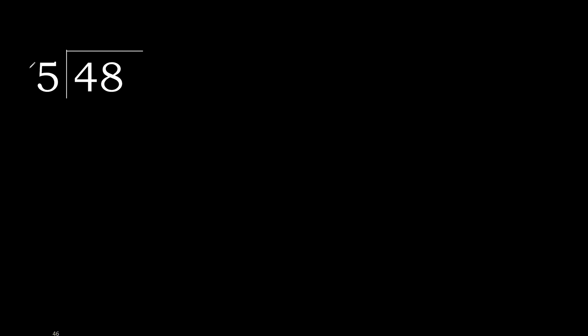48 divided by 5. 4 is less, therefore next. 48 is not less, therefore with 48. 5 multiply by which number is nearest to 48 but not greater? 5 multiply by 9 is 45.